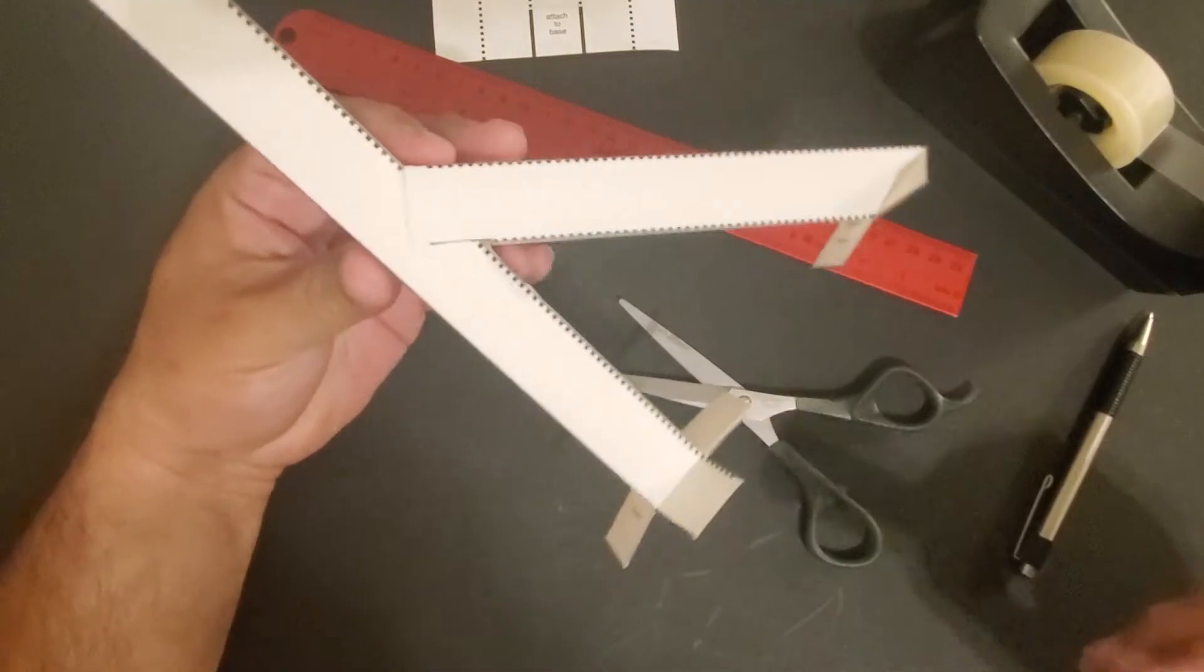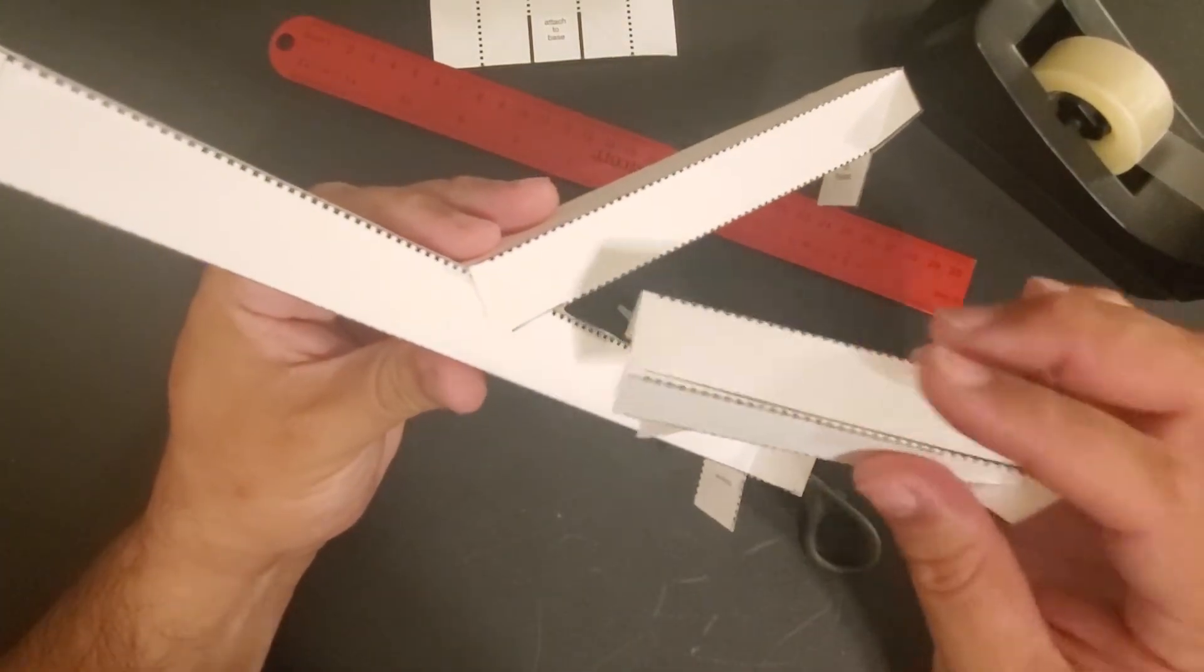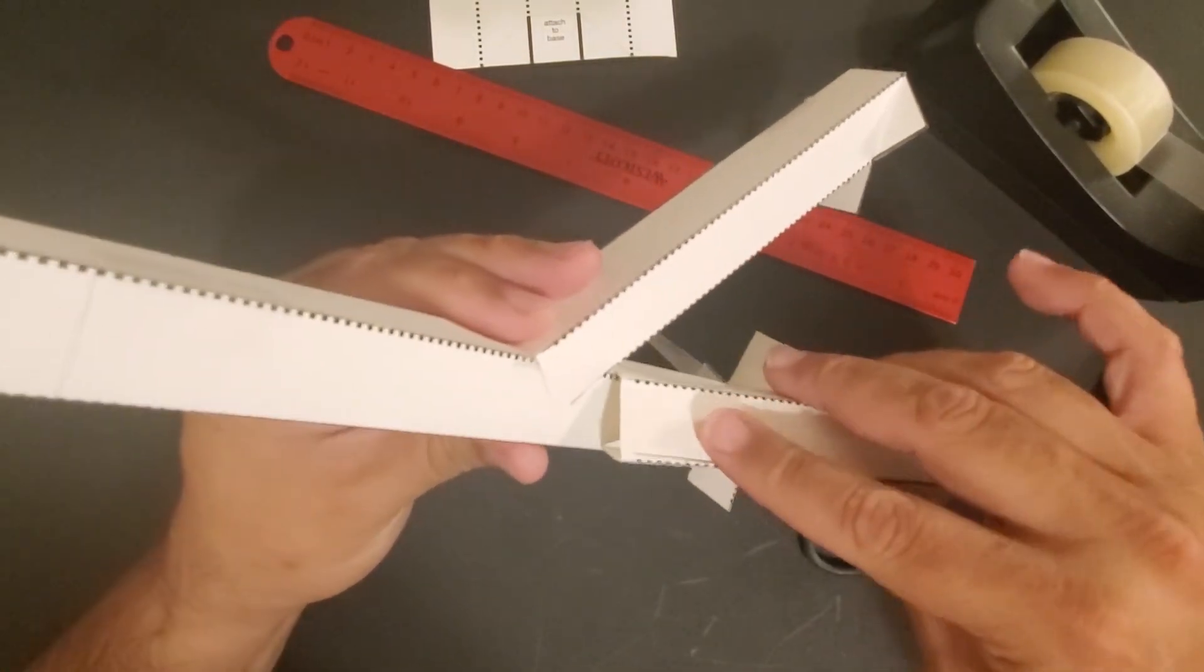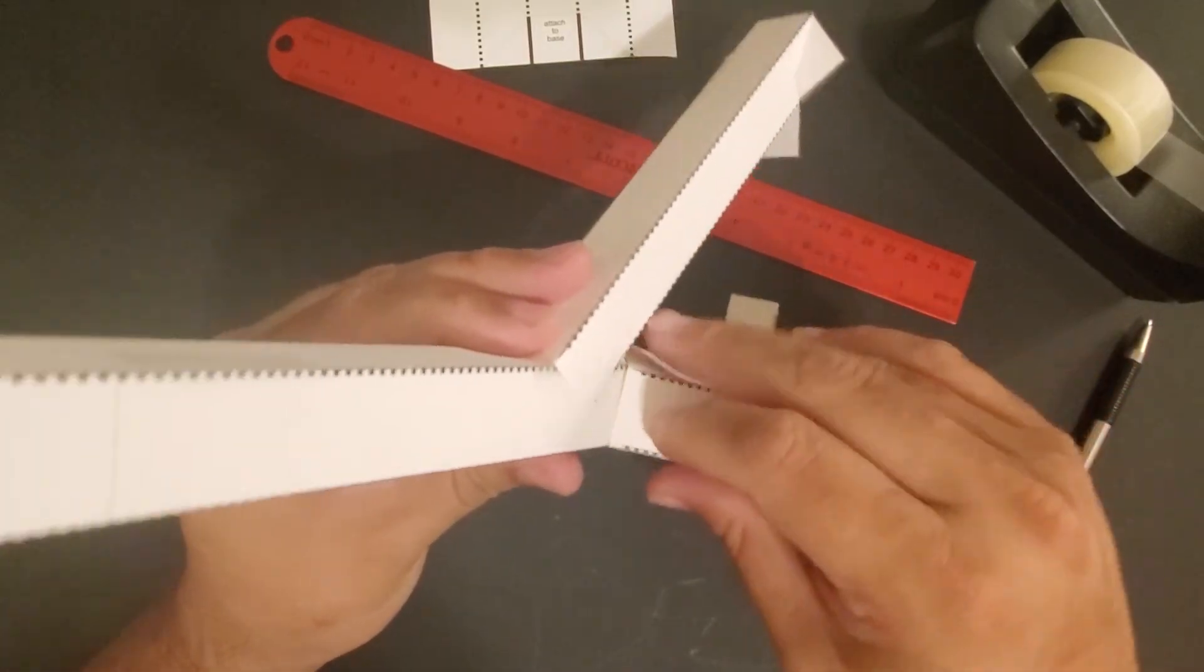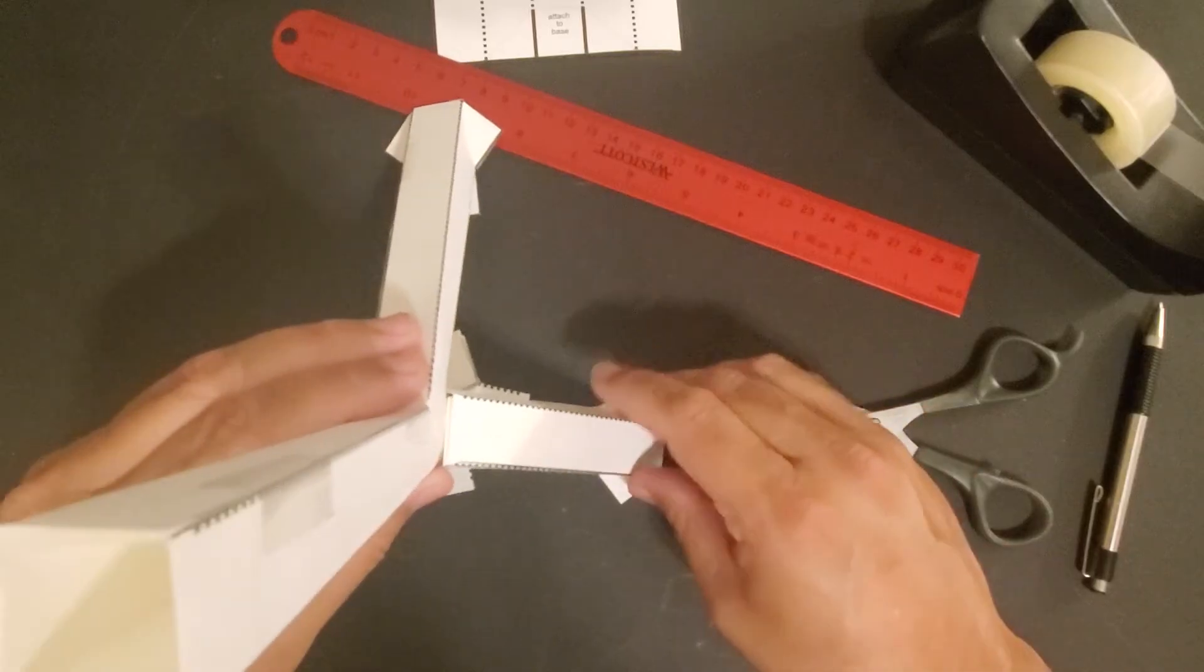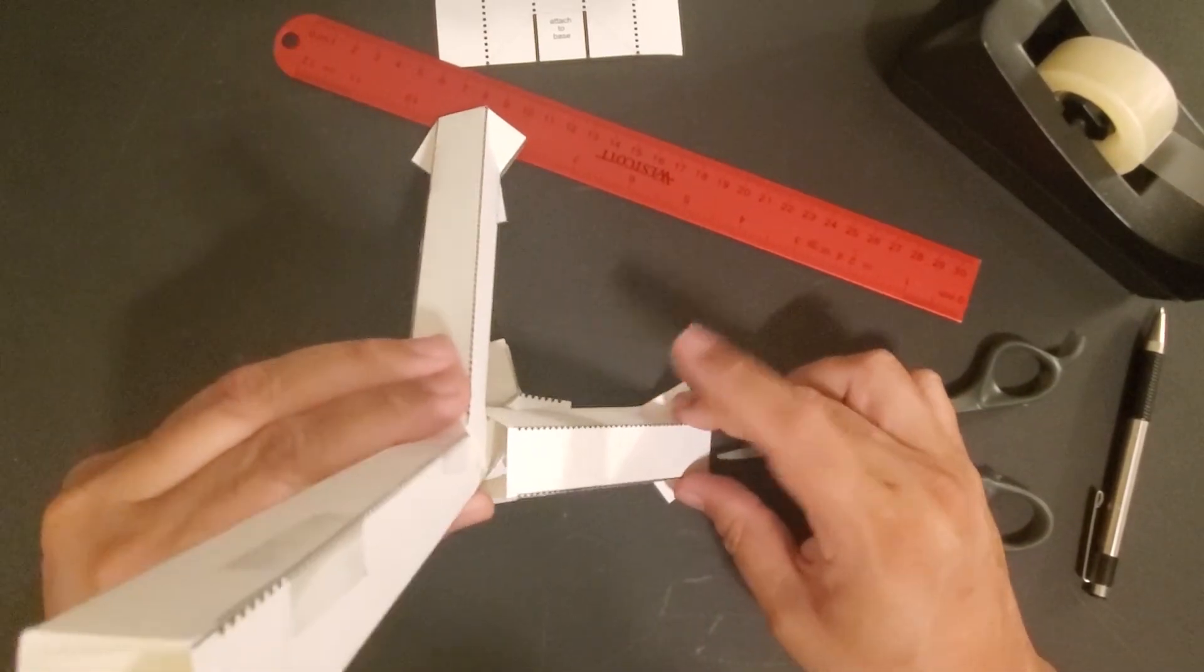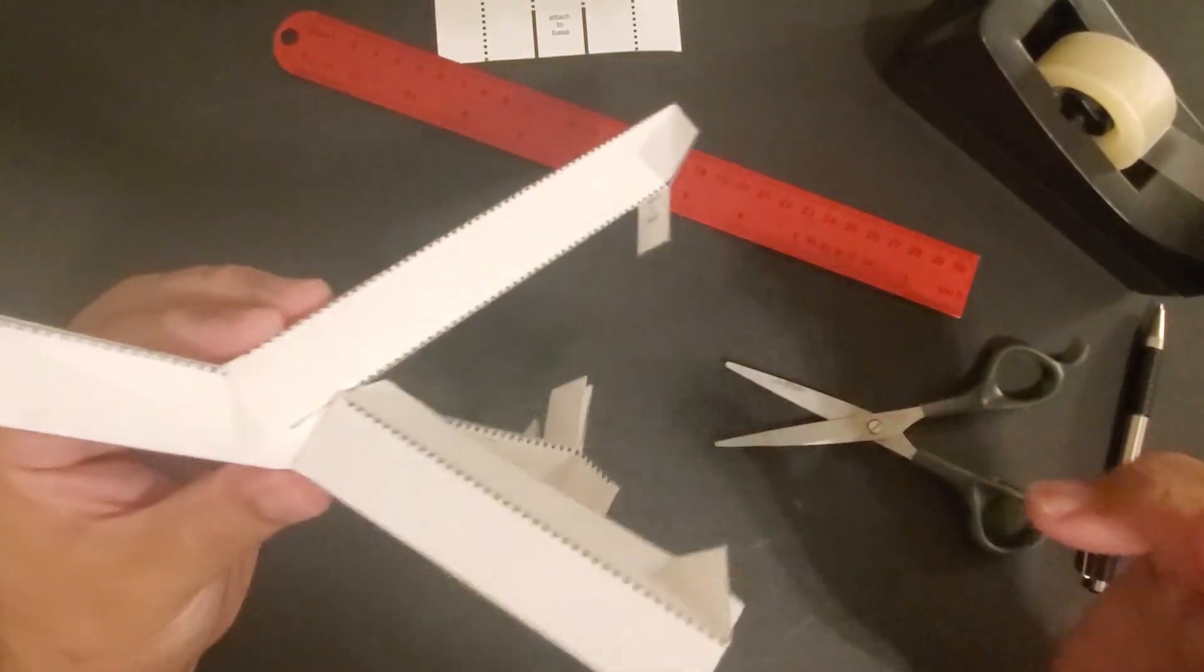So with the long one attached, the short one will attach just below it. And the whole thing will get attached to the base. And so it will kind of look like that.